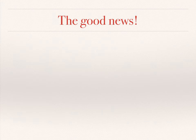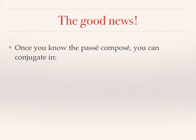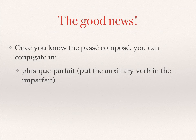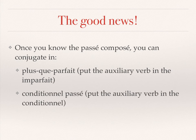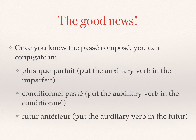Now, I've got very good news for you. Once you know how to use the passé composé, you can conjugate in other tenses as well. The first one is the plus-que-parfait — all you have to do is put the auxiliary verb in the imparfait. Then you have the conditionnel passé — you just put the auxiliary verb in the conditionnel. And finally, the futur antérieur, if you put the auxiliary verb in the future.